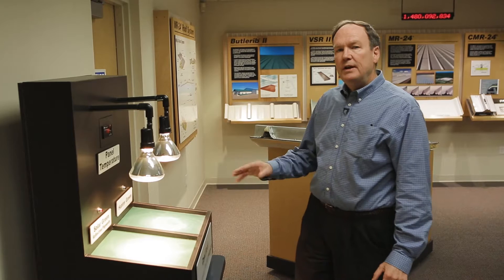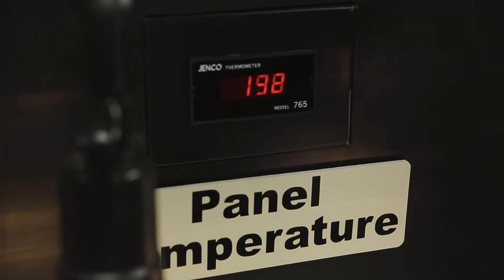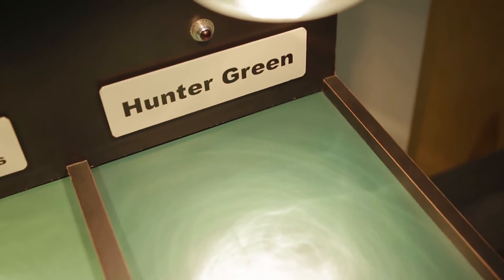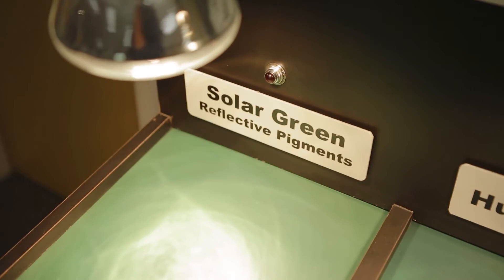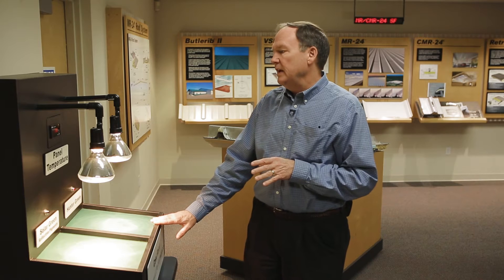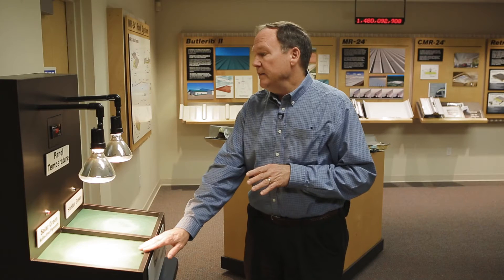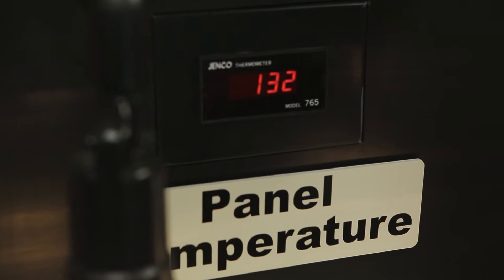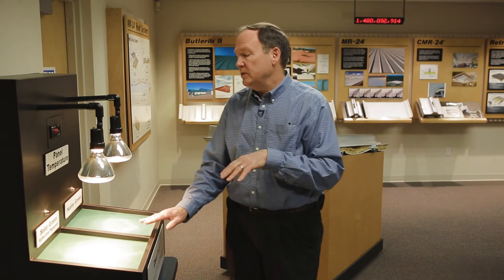And this is another little demonstration of the effect of the sun on the roof. Under this particular light source we have the original Hunter Green panel and a modified panel called Solar Green. The Hunter Green panel is 148 degrees and this product is 132 degrees. So we have a 16 degree temperature difference just by changing the pigments in the paint.